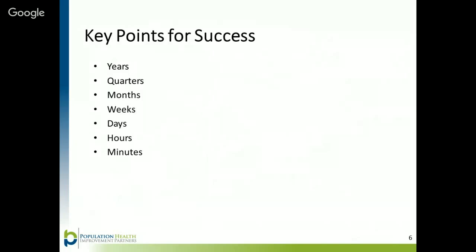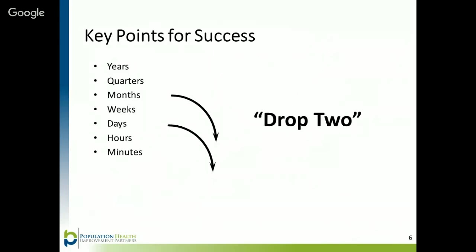One tip to help you try changes on the smallest scale possible is the scaling down, or DROP-2, principle. When you have a change and you think, let's test this change for the next month — scale down the change by two. Let's test this change for a day instead. Testing on a small scale will also allow your colleagues to try the change and give feedback before it is implemented across the entire organization, which will increase buy-in and help reduce resistance to the change.